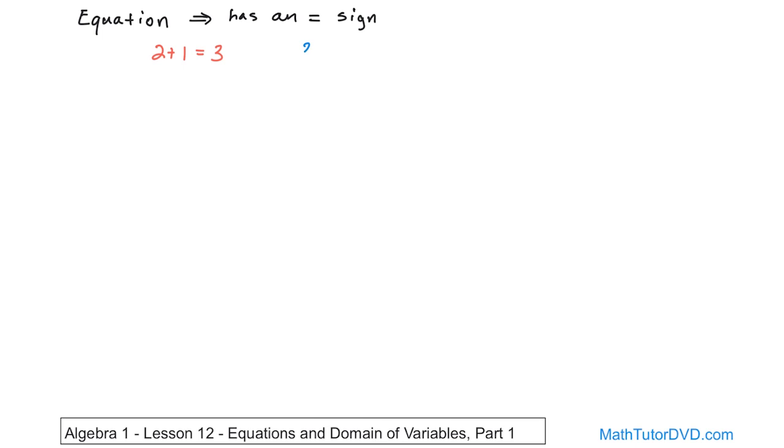Another example would be three plus x is equal to four. Now, this is also an equation, but the only difference is we have an unknown quantity here, an unknown variable, right? But there is an equal sign, and that's what makes an equation.